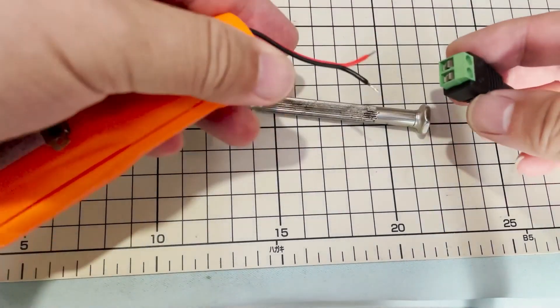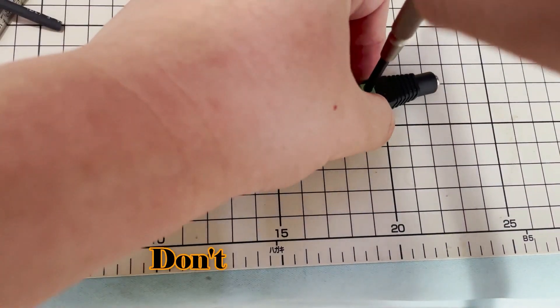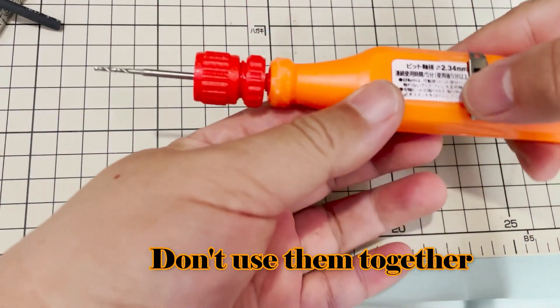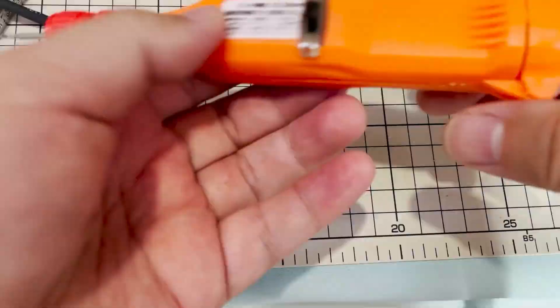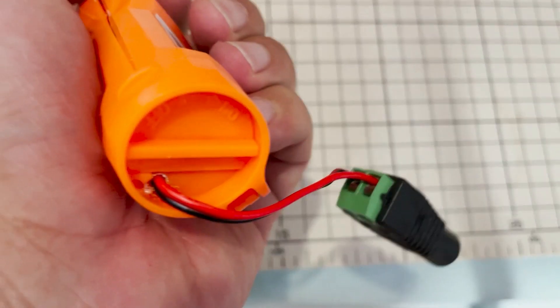But it can also work with a DC power supply from 1.5V to 12V. Take care not to use them at the same time. Only when the AAA battery is switched off, then you can use another power supply.